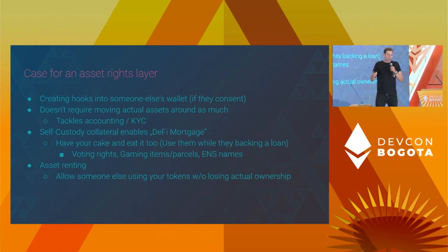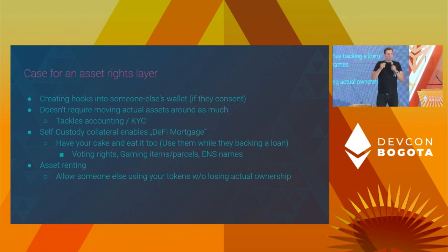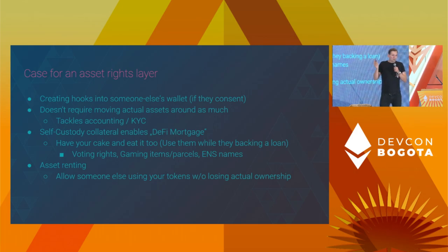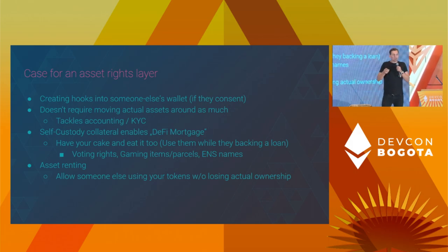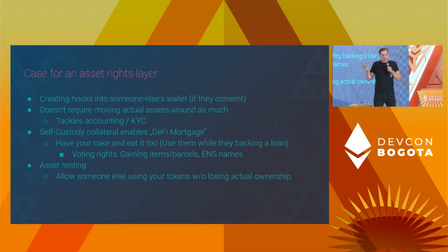For us, the case is a DeFi mortgage where we want to allow someone to buy a piece of decentralized real estate, lock it as collateral, keep it in their custody, still allow them to use it, but use the value of the assets as backing for a loan. Another example would be DAO voting rights — you still want to use those, but you might want to utilize the value backing the particular token. The same goes for gaming items or ENS names, which are again the perfect example.